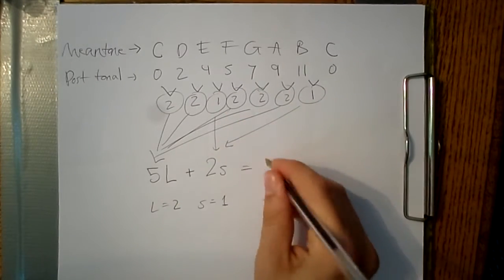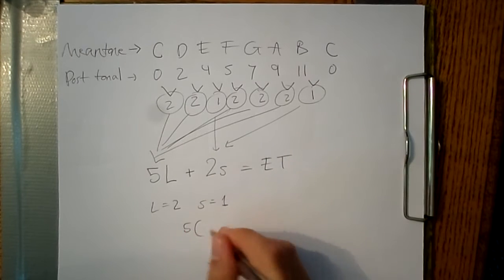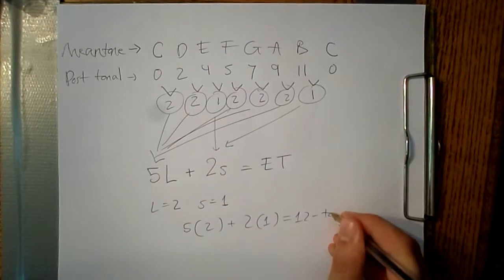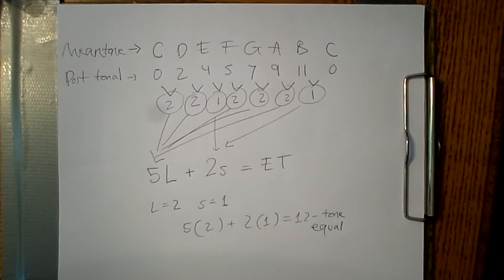5L, 2S is sometimes a diatonic scale, and sometimes not. It depends on what order the L's and S's are in. If L and S were close to the same, for example, it could sound like something closer to 7 equal, because they're close to the same size, and there's 7 steps.